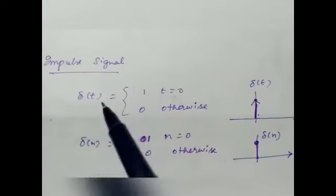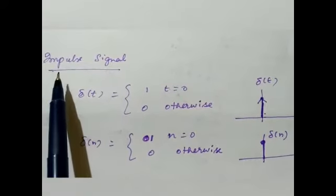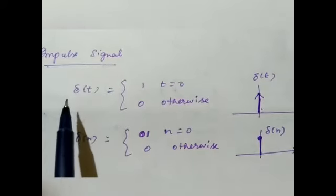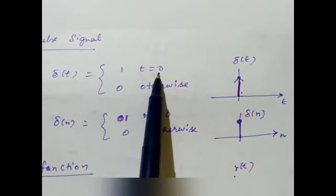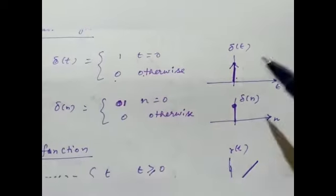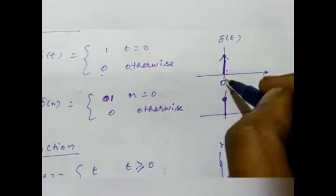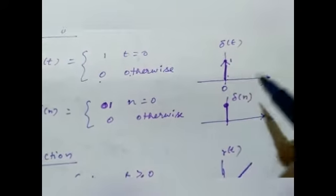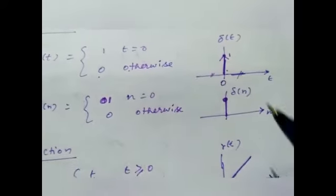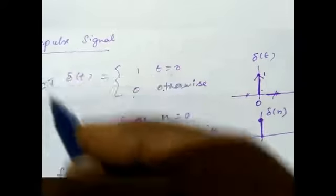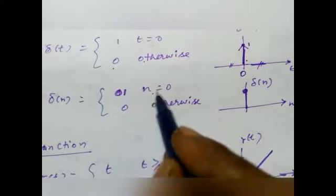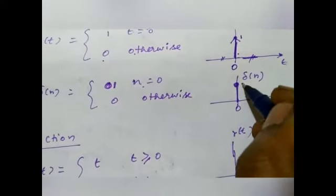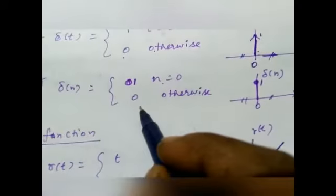The second signal used is the impulse signal, denoted by δ(t), whose value is 1 for t equal to 0 and 0 everywhere else. The same signal for discrete time, δ(n), is equal to 1 for n equal to 0 and 0 everywhere else.